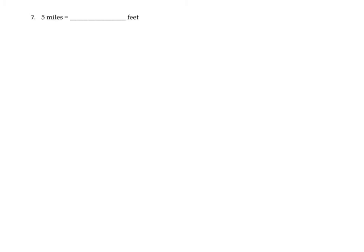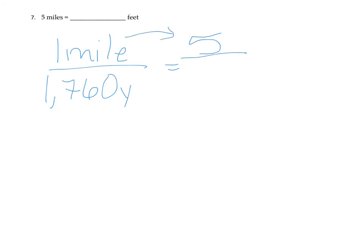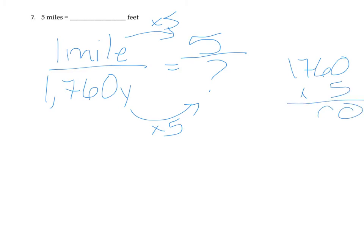Question six: we have 5 miles and want to know how many feet. From your reference sheet, 1 mile equals 1,760 yards. We have 5 miles, so we multiply by 5. That gives us 8,800 yards. Then we know 1 yard equals 3 feet, and we have 8,800 yards, so we multiply 3 by 8,800.